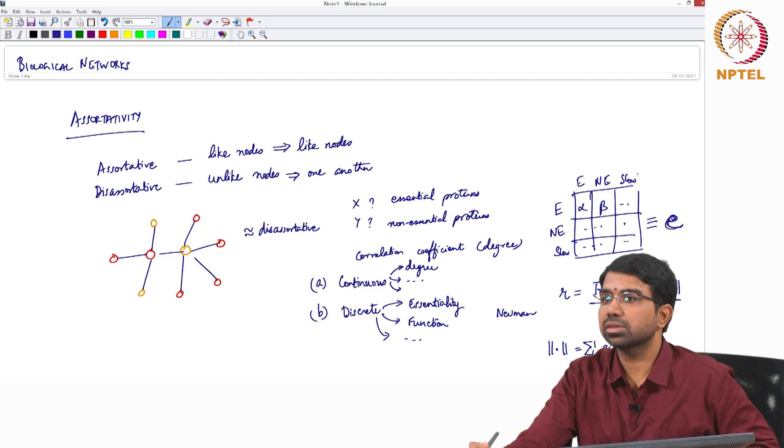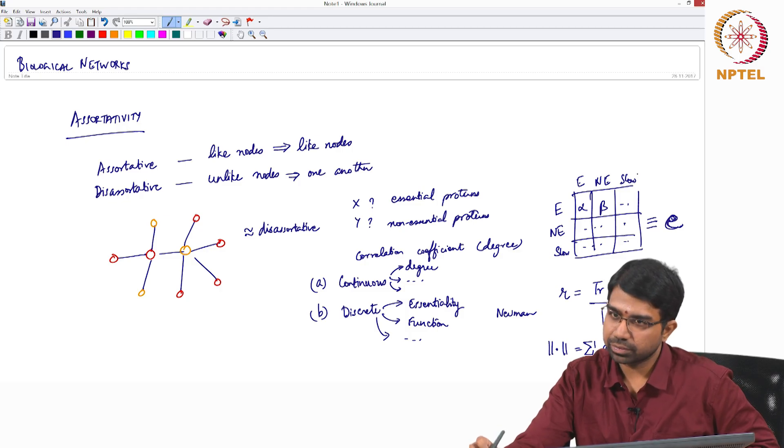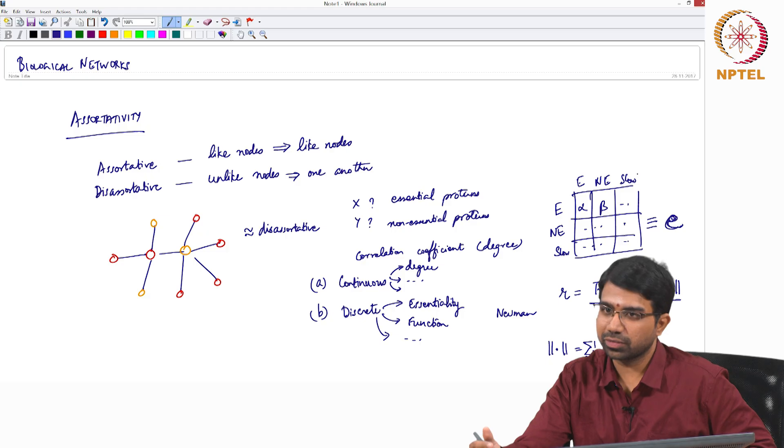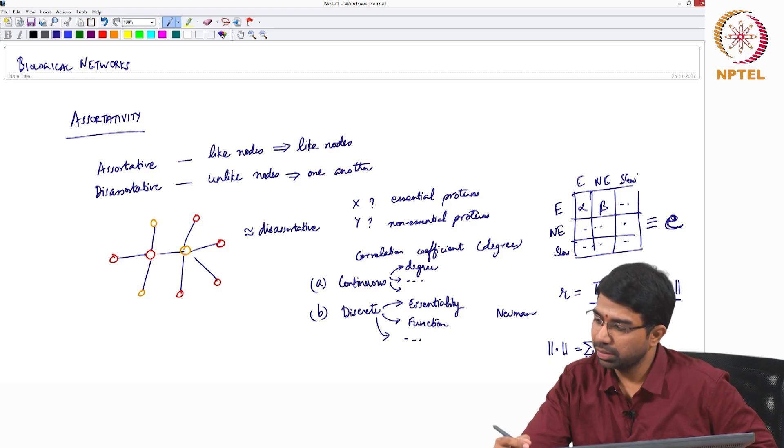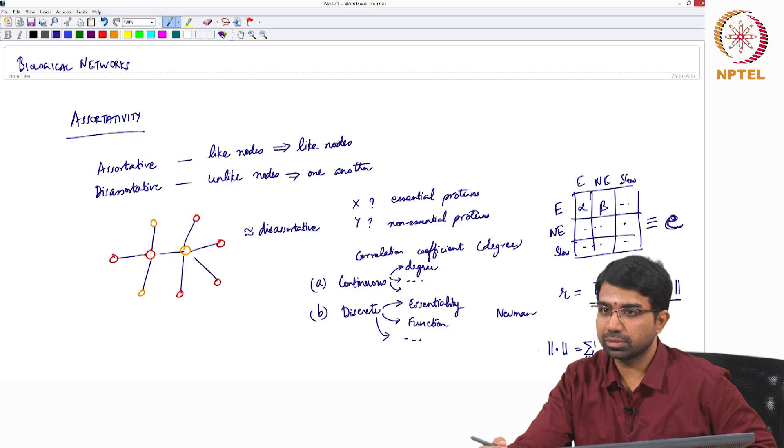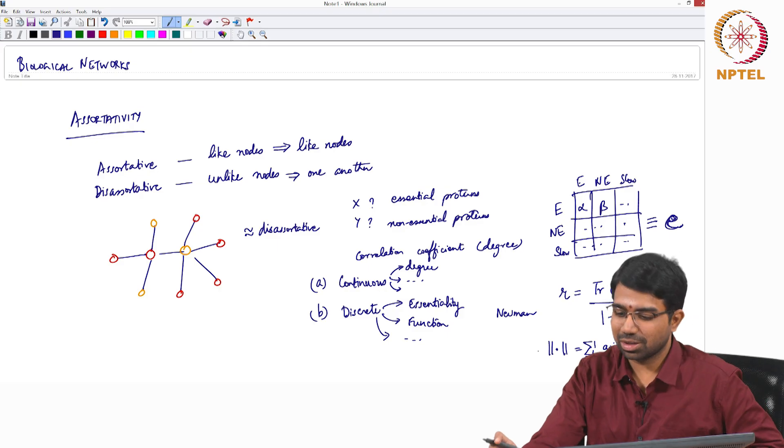What is the trace of a matrix? Sum of all the diagonal elements. Sir, if we want to find the sum of T, why can we just calculate the trace and divide by total number of edges? This happens to be a better way to quantify it. This number actually goes from minus 1 to plus 1. Minus 1 would be perfectly disassortative, plus 1 would be perfectly assortative, and values in between are neither assortative nor disassortative.